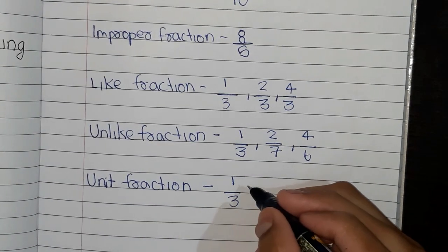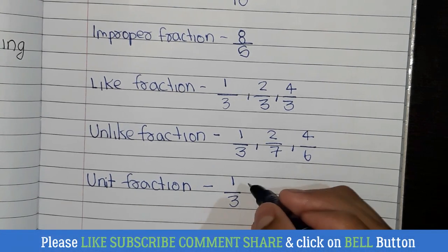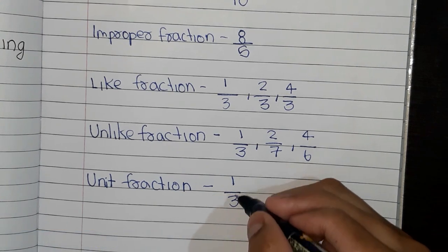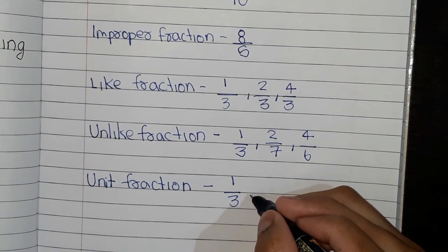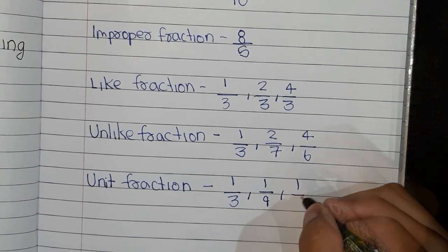A fraction whose numerator is 1 is called as unit fraction. As you can see in this example, 1 by 3, numerator is 1. We will take some more examples: 1 by 9, 1 by 7.